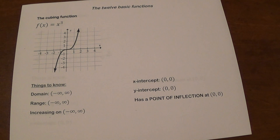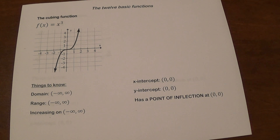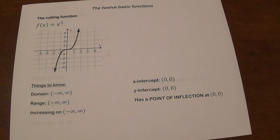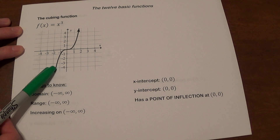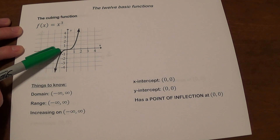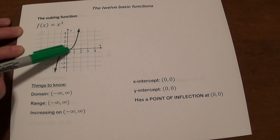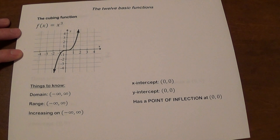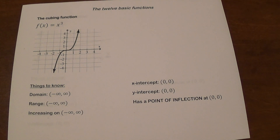Our next function is the cubing function, f of x equals x cubed. This function's domain and range are both all real numbers. Similar to the line, it is increasing on the entire domain, and its x-intercept and y-intercept are at the origin. This graph has what's called a point of inflection — it's rising, kind of bends and slows down, then turns and starts going up faster and faster. That's a topic for calculus, but it's good to know.